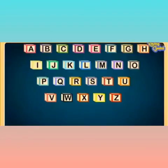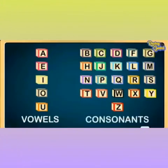You know that the English alphabets consist of 26 letters in all. They are A, B, C, D, E, F, G, H, I, J, K, L, M, N, O, P, Q, R, S, T, U, V, W, X, Y, and Z. And out of this, the vowels are A, E, I, O, U.